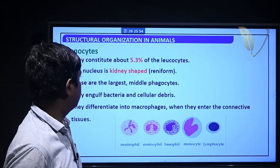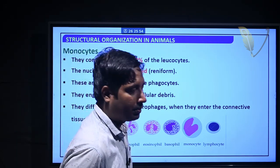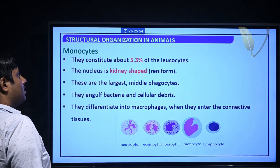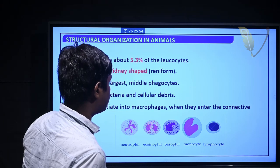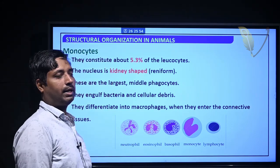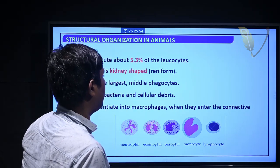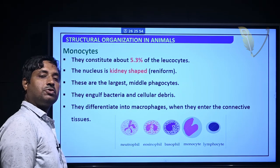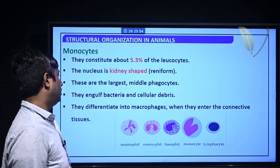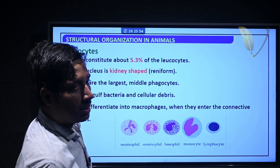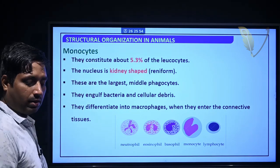Monocytes constitute about 5.3% of the total leukocyte. The nucleus is kidney-shaped or reniform. These are the largest phagocytes, engulfing bacteria and cellular debris. They differentiate into macrophages when they enter the connective tissue.